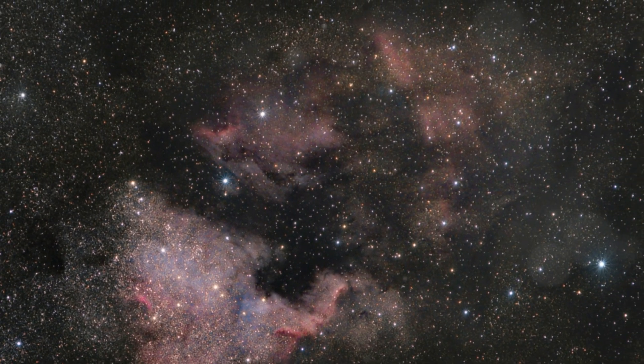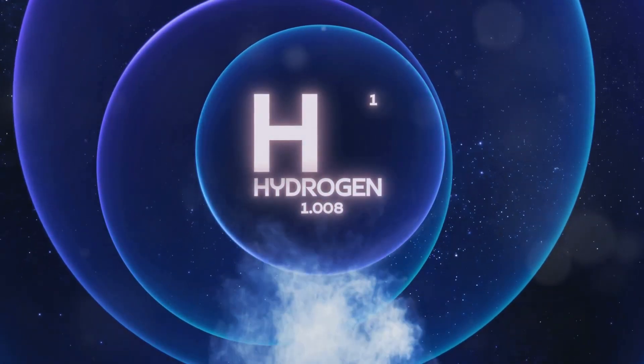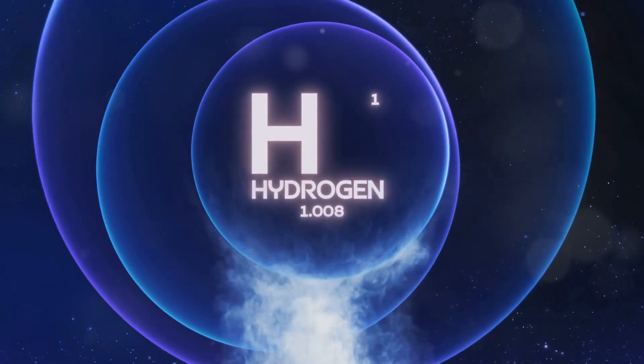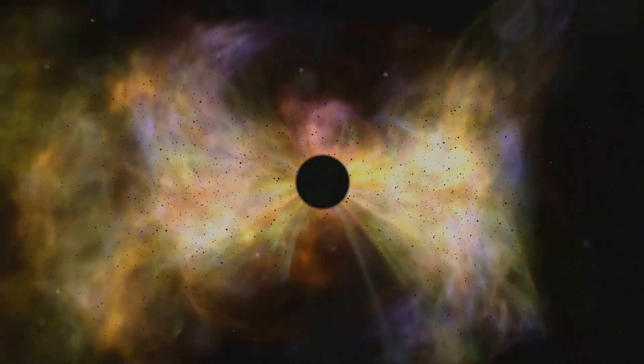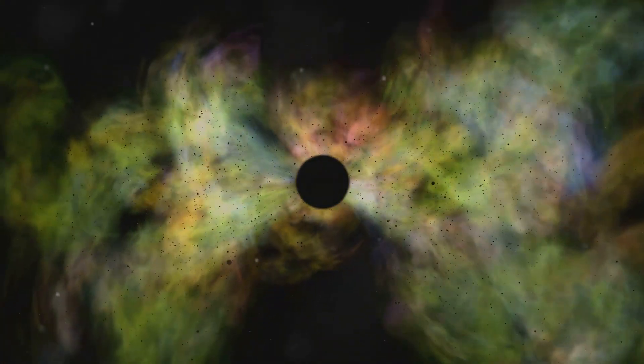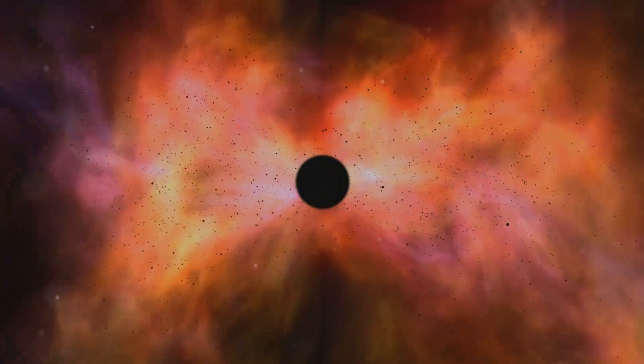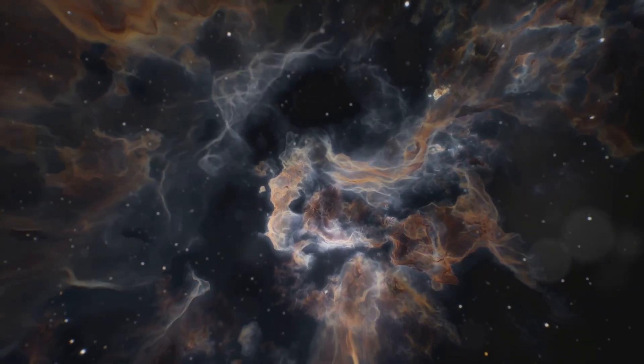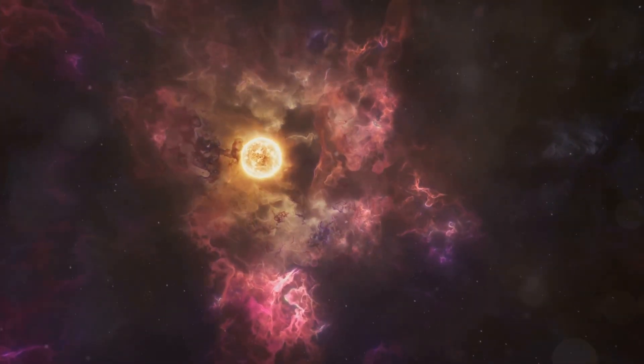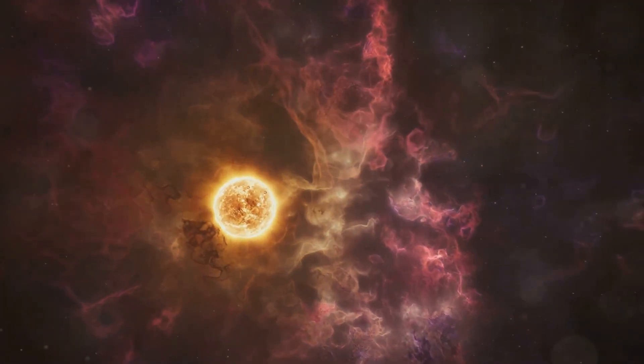The first atoms to form were hydrogen and helium, the simplest and most abundant elements in the universe. These elements became the building blocks for all the matter that would follow. Over time, gravity caused these atoms to clump together. The force of gravity pulled the gas atoms into increasingly dense regions, forming vast clouds of gas. These clumps of gas eventually became so dense that they collapsed under their own gravity, and this is how the first stars were born. These stars ignited the nuclear fusion processes that would light up the universe.